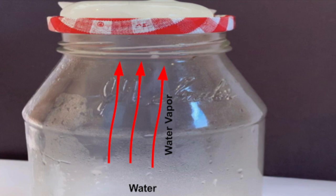This water vapor travels to the top of the jar and cools because of the ice at the top of the jar. The ice causes the water vapor to condense into water. Condensation is when a gas cools into its liquid form.